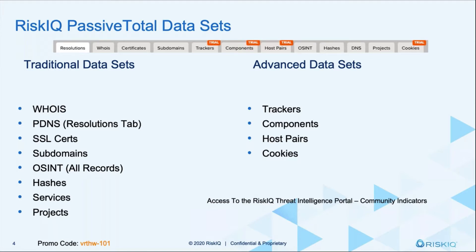As an enterprise user, you get access to our advanced data sets — things like trackers, components, host pairs, and cookies — which are all gleaned from our virtual users and web crawlers. It's really helpful to lean on those data sets when the latest WHOIS record is redacted for privacy and you don't have any good contact information to pivot off of to find other domains. You can leverage things like trackers or cookies to find threat actors that are clearly trying to impersonate an organization.